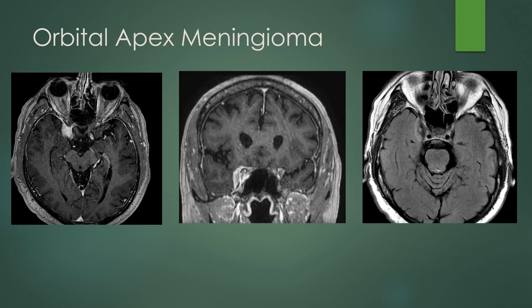You can get a meningioma at the orbital apex, which usually starts around the anterior clinoid process. Here's the anterior clinoid process with a homogeneously enhancing dural-based mass extending into the orbital apex, seen around the cavernous sinus as well. On FLAIR it demonstrates hyperintense signal, and you do not want that optic nerve compressed at the optic canal or superior orbital fissure compressing the structures supplying the orbit.